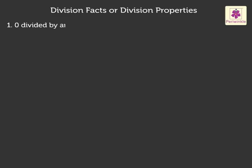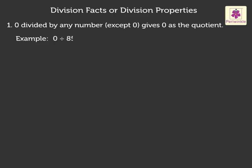First, 0 divided by any number except 0 gives 0 as the quotient. For example, 0 divided by 85 is equal to 0. Remember, a number cannot be divided by 0.